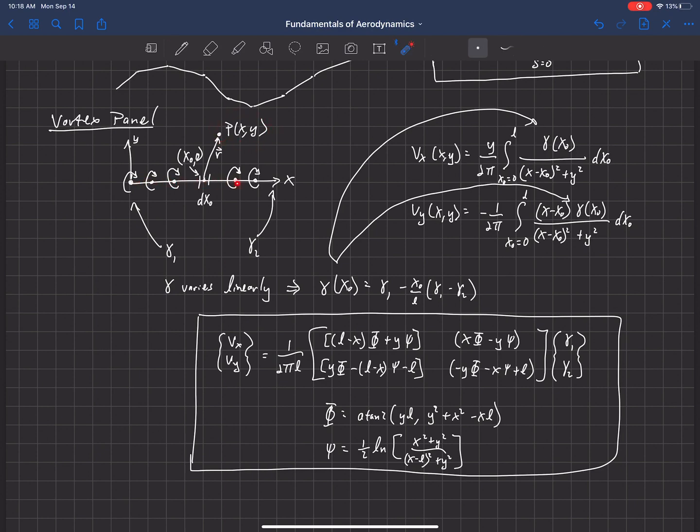This is the equation for the velocity induced by a vortex panel on any point P(x,y). But what we've assumed is that that panel is straight - that's the definition of a panel, it's just a straight line - and we've assumed that it varies linearly in strength from γ₁ to γ₂.